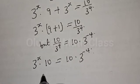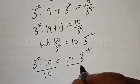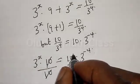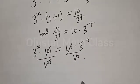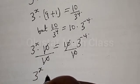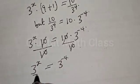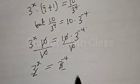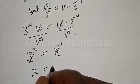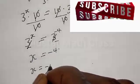Our equation becomes 3 raised to power x multiplied by 10 equal to 10 multiplied by 3 raised to power negative 4. Now divide both sides by 10 — this cancels — and our equation becomes 3 raised to power x equal to 3 raised to power negative 4. Since they have the same base, x is equal to negative 4. Our final answer is x equals negative 4.